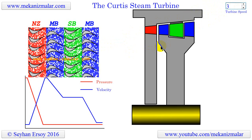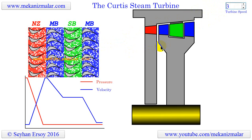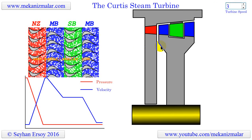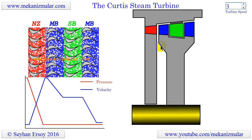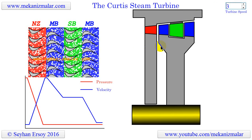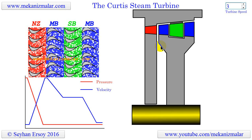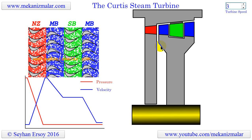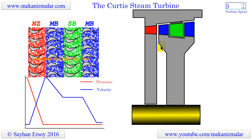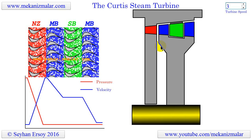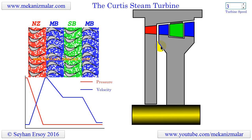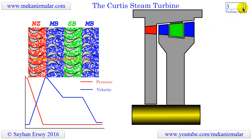In this turbine, rotation of the blades happens in the action direction. In reaction turbines, the steam is ejected from rotating blades, like hot gases ejected from a rocket nozzle. During this process, the rotating blades react to this expelling of the steam by moving in the opposite direction. That is where the name 'reaction' comes from.